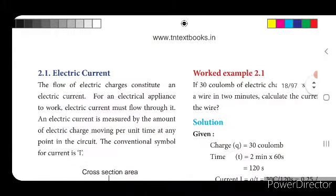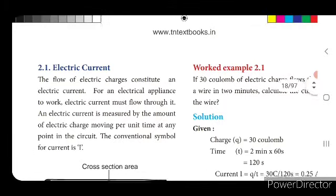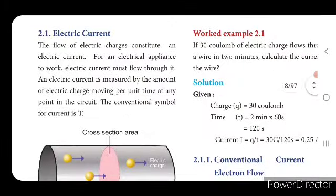Now we will see electric current. The flow of electric charges constitutes an electric current. In an electric current, electric charges are present and they are flowing. The flow of electric charge we call that as electric current. When you switch on, electric charges start to move — that is what we call electric current.